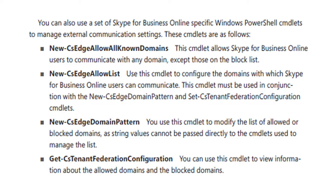New-CS Edge Allow List. You can use this cmdlet to configure the domains with which Skype for Business Online users can communicate. This cmdlet must be used in conjunction with the New-CS Edge Domain Pattern and the Set-CS Tenant Federation Configuration cmdlets.